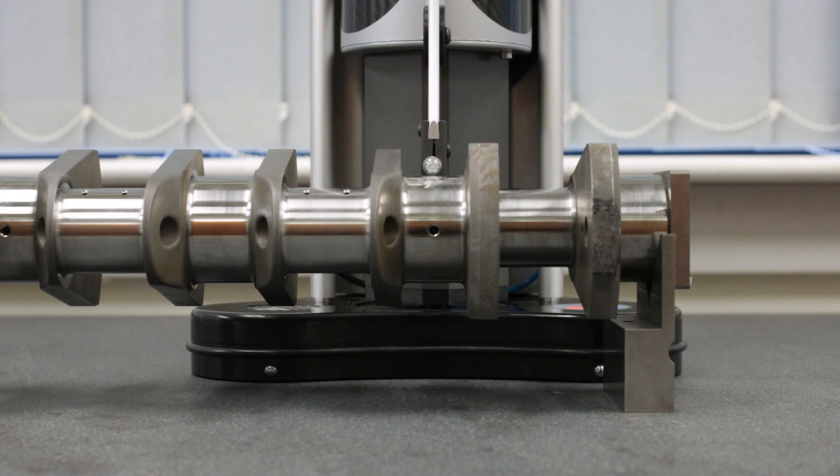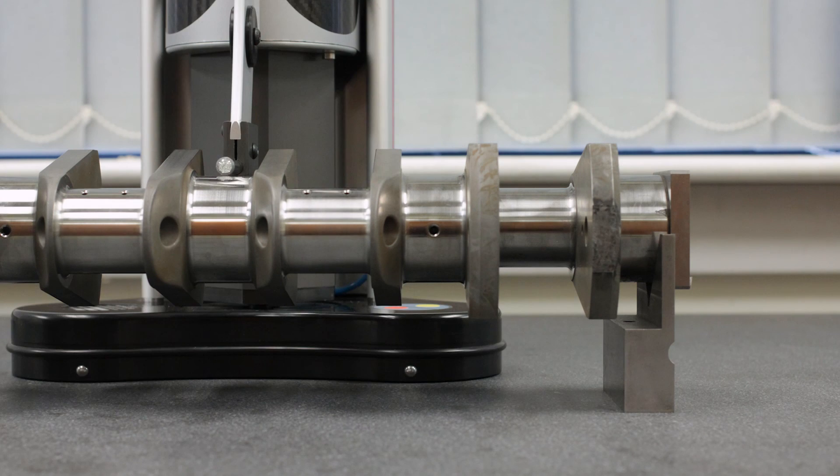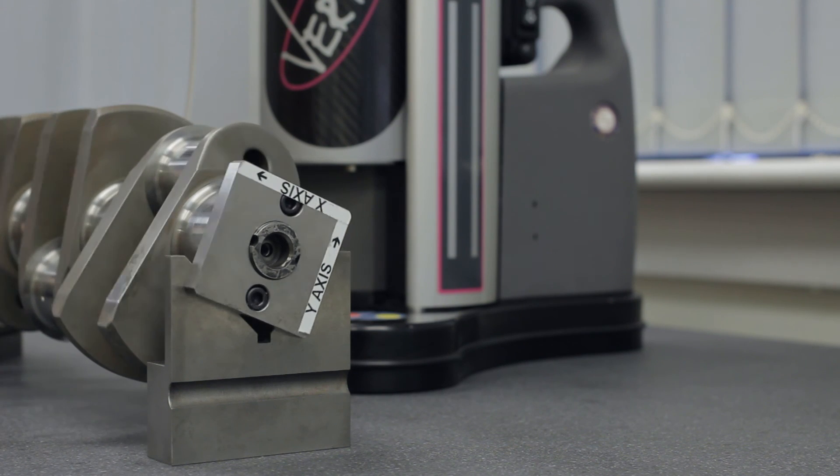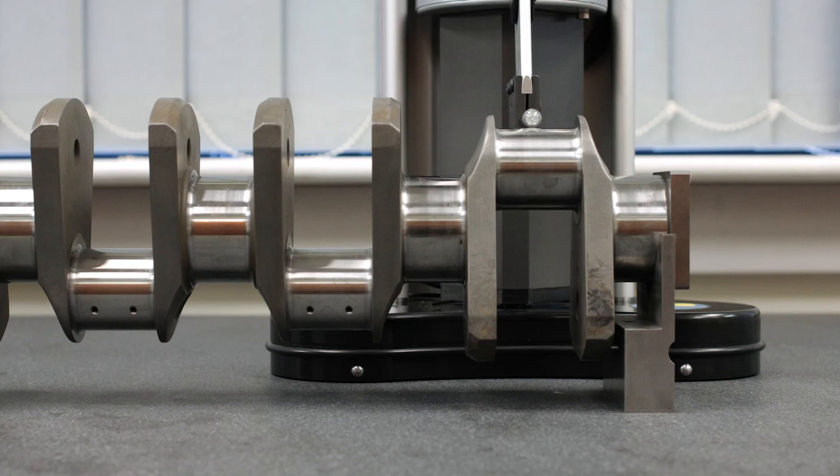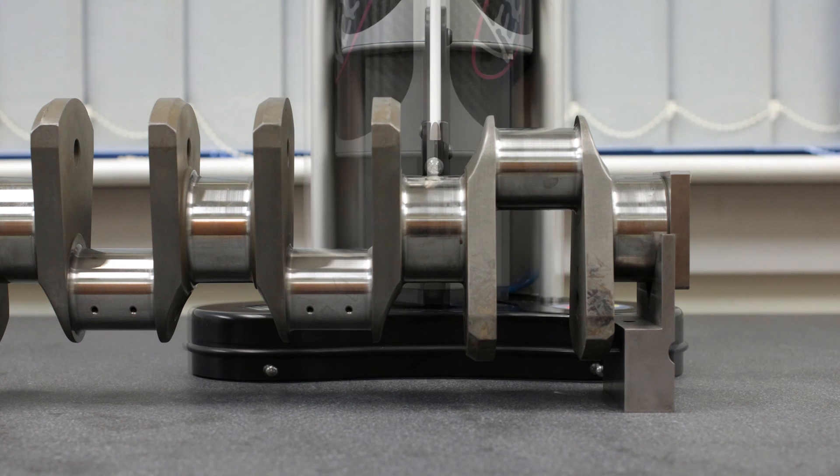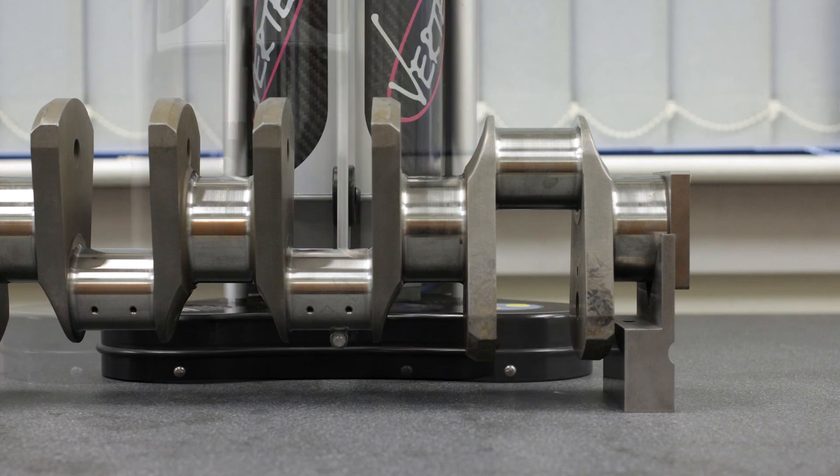Crankshaft diameters are measured in the first orientation. The crankshaft is then rotated and the process repeated in the second orientation. Rectangular and polar dimensions between features can be reviewed.